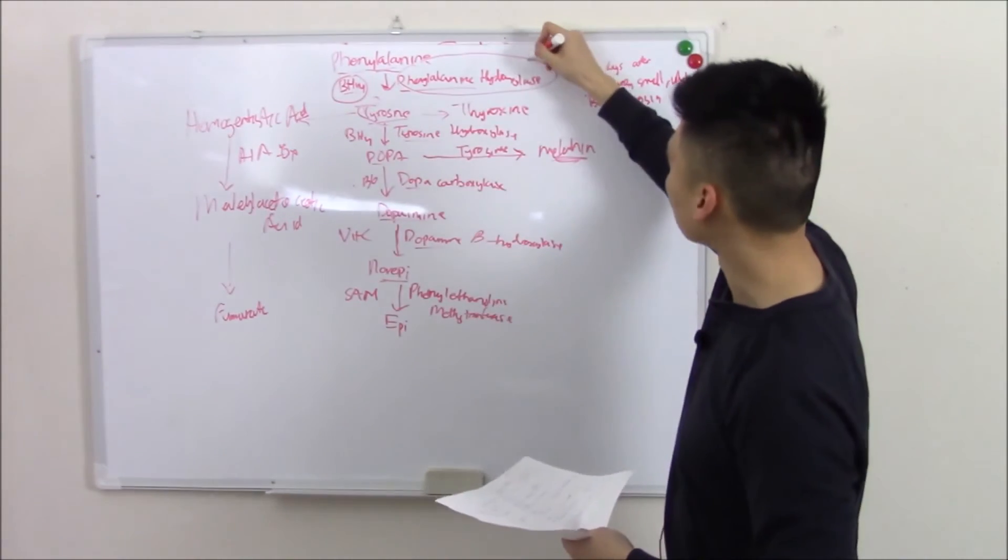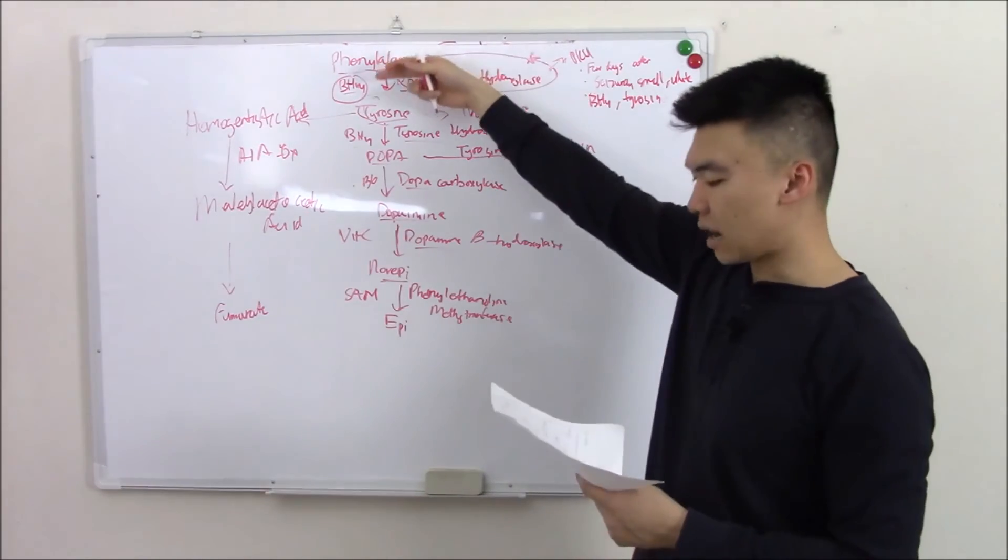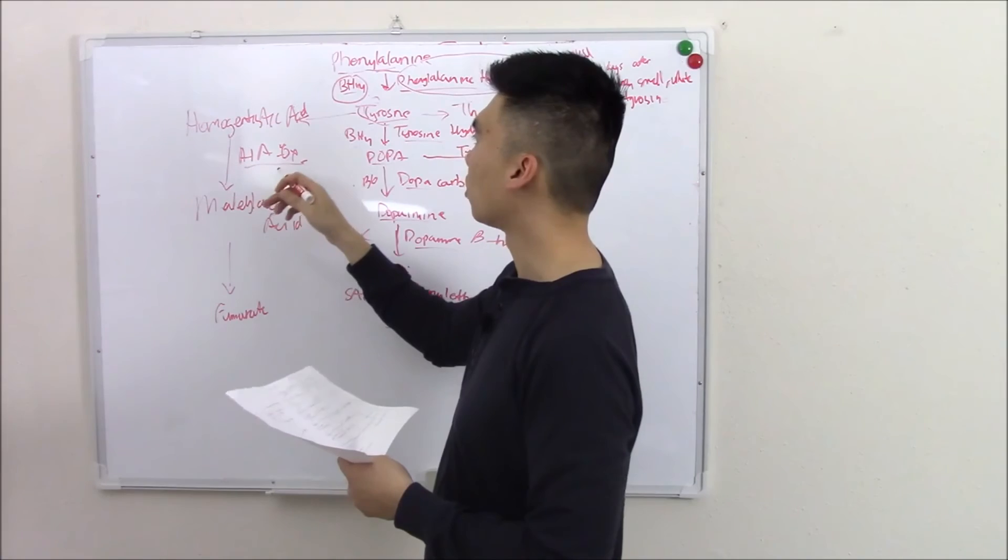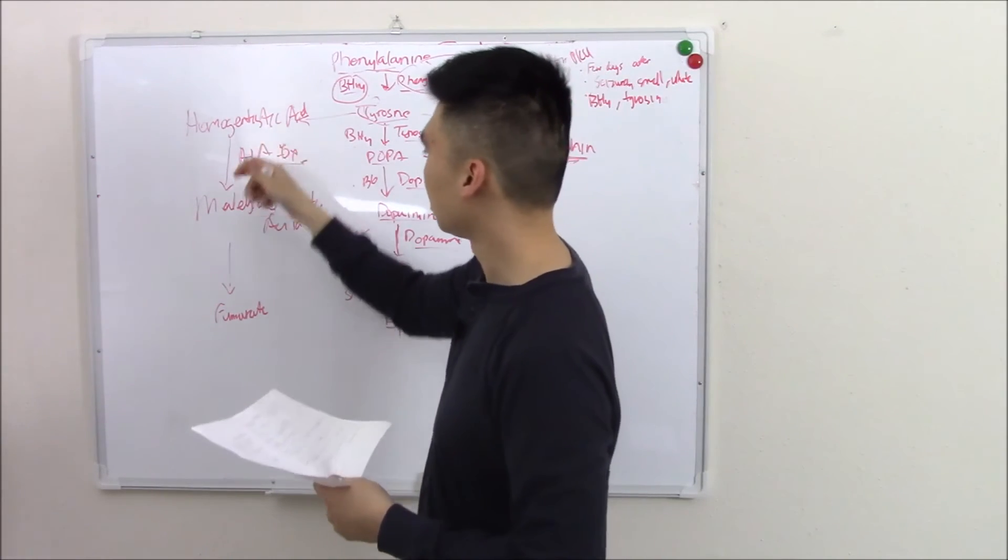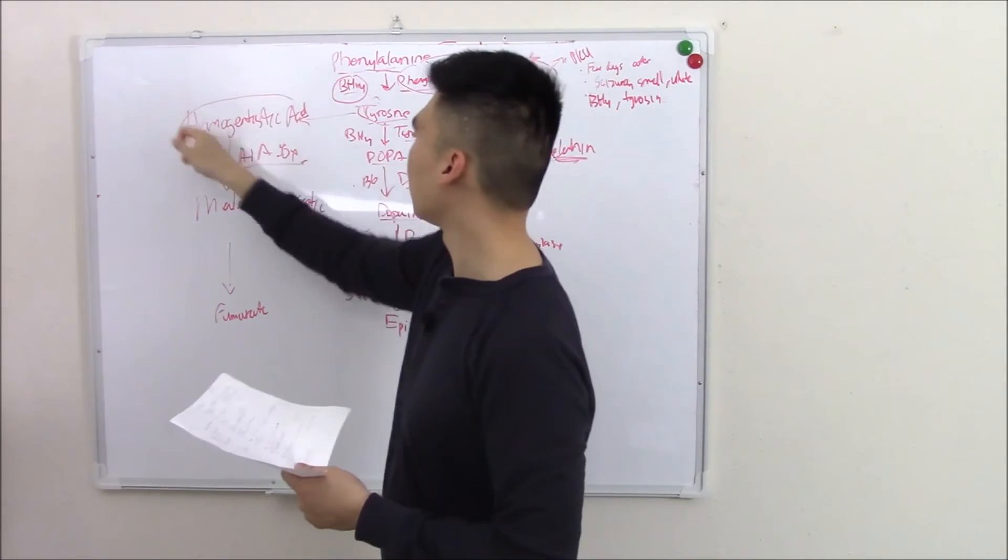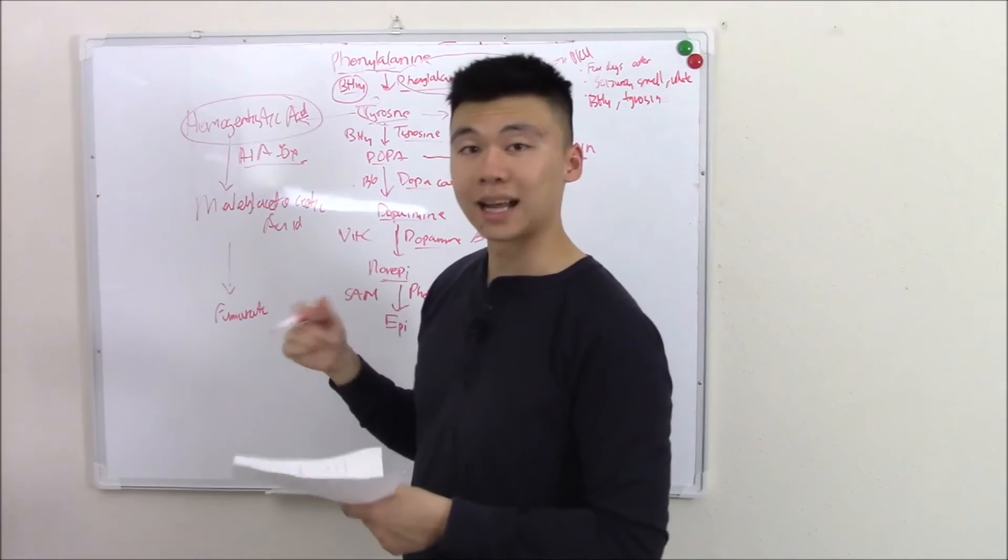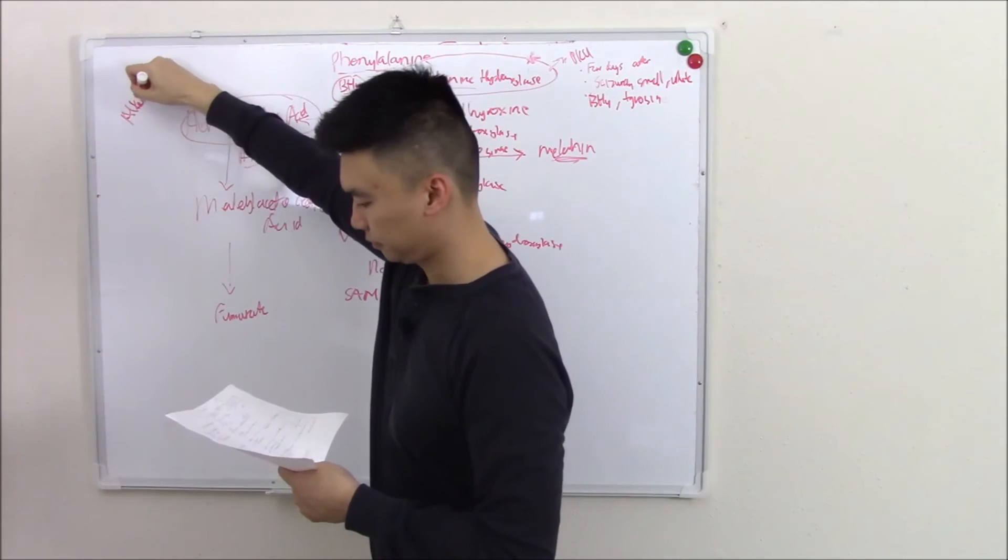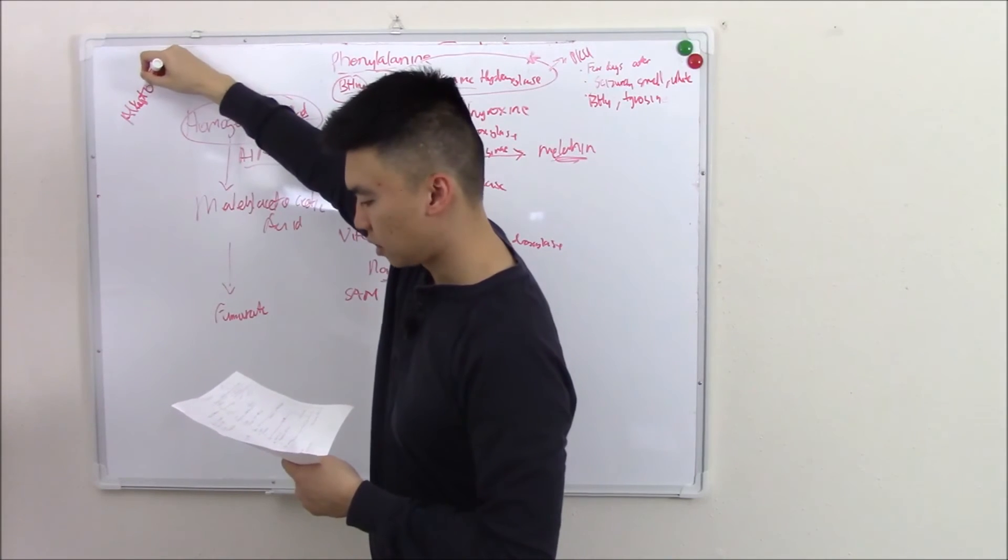That is the first one that you need to know. Moving down on the list, right here. If you have a deficiency in homogentistic acid oxidase, you can't break it down. You have a buildup of this homogentistic acid, and it's called alkaptonuria.